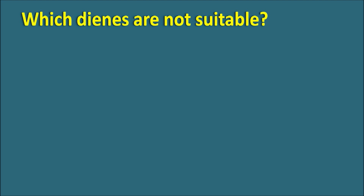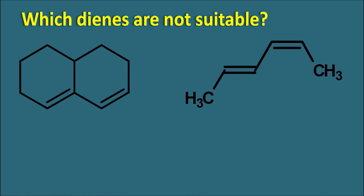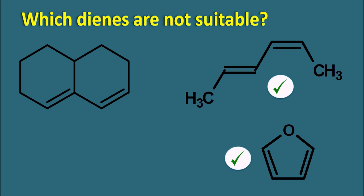Now let us see which types of dienes are not suitable for the Diels-Alder reaction. Among three conjugated dienes shown: the acyclic conjugated diene and the s-cis locked diene can undergo the reaction, but the first one cannot. The first one has the s-trans configuration, and whenever a diene has the s-trans configuration it cannot undergo the Diels-Alder reaction. In the next video we will discuss the stereochemistry of the Diels-Alder reaction, which compounds can or cannot undergo it, the effect of different substituents on the dienophile, and which stereoisomer forms as the major product.